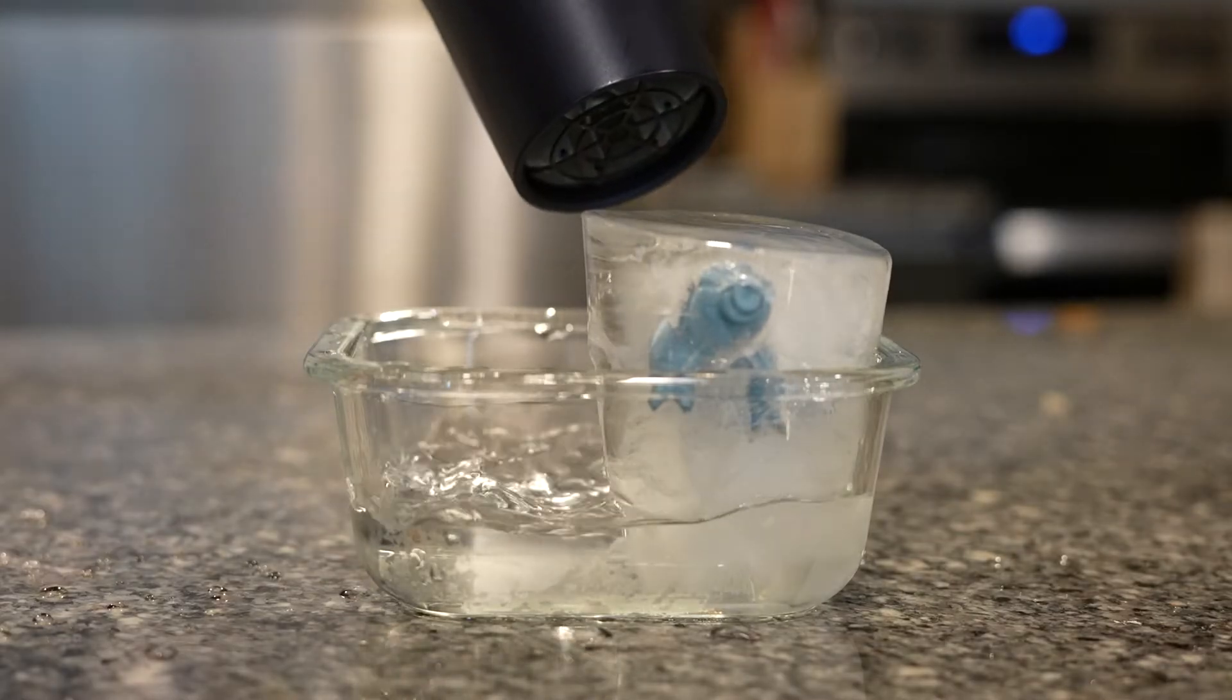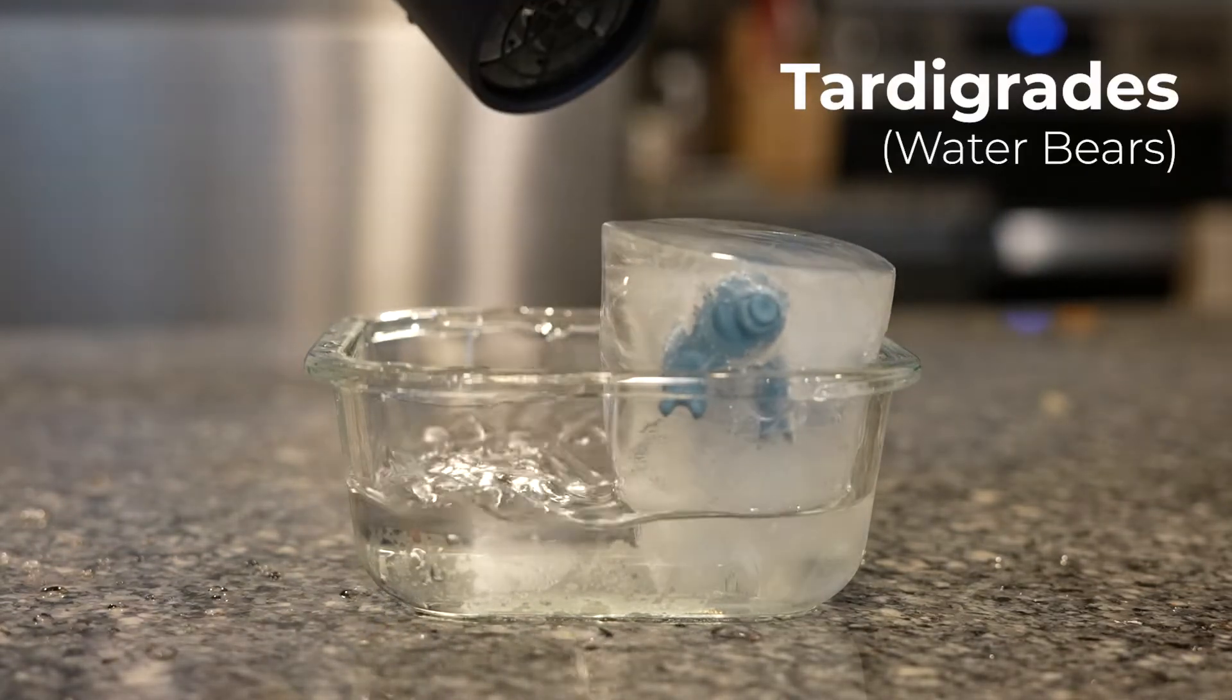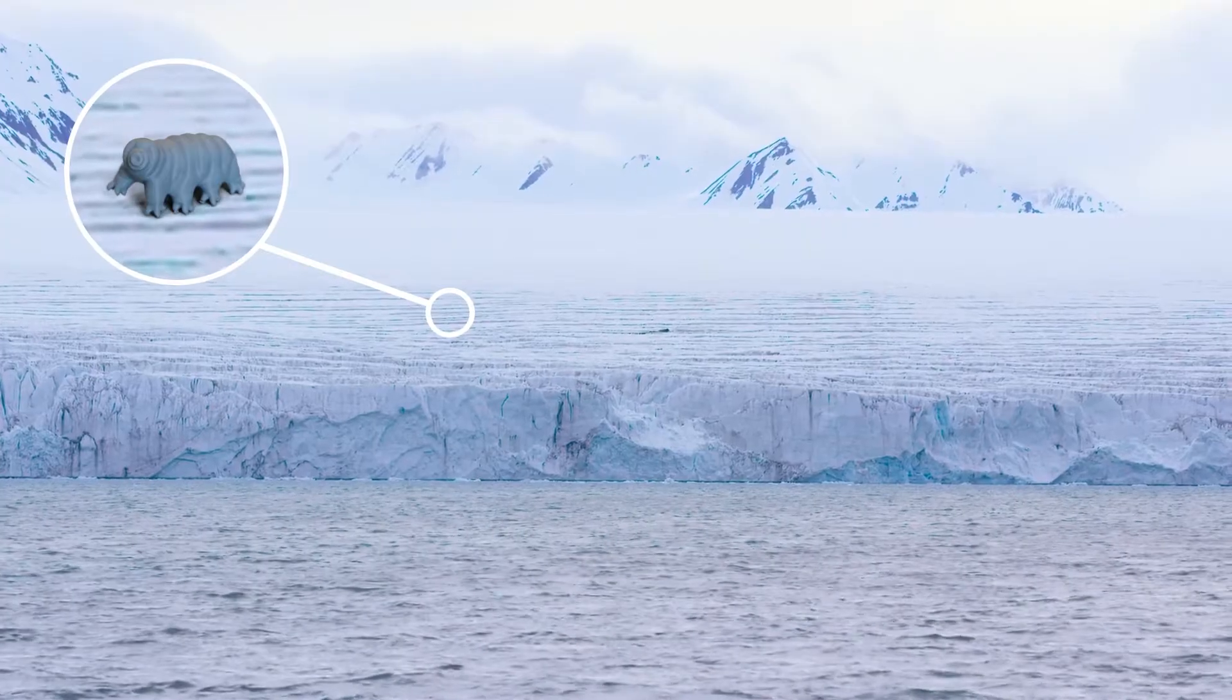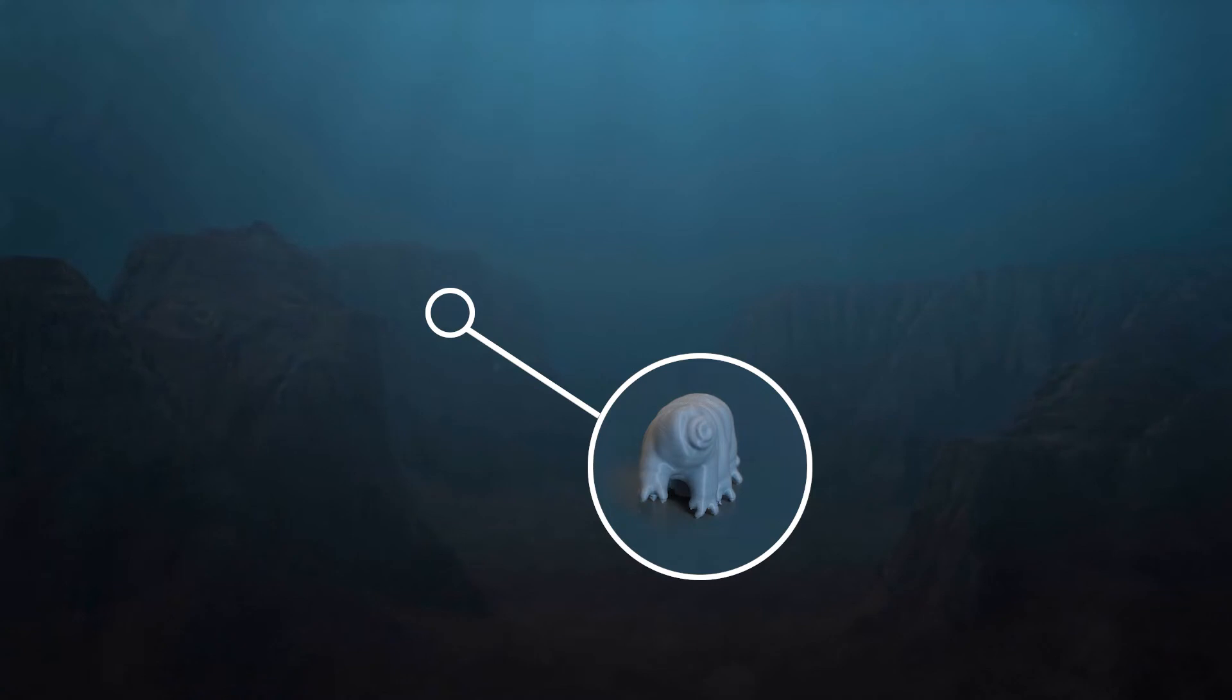These environments are no problem for tardigrades, also known as water bears or moss piglets. They've been found in almost every corner of our planet, no matter how extreme.